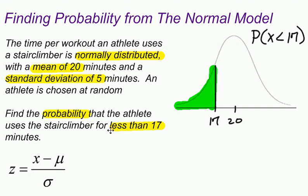What I really want to do is change this 17 minutes into a z-score. There's a way you could find this area without changing it into a z-score, but it's easier to just use z-scores because you're going to use this all the time anyway.